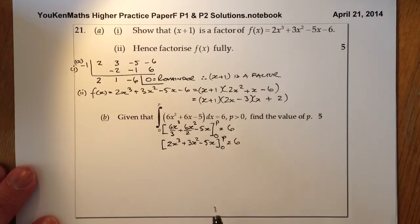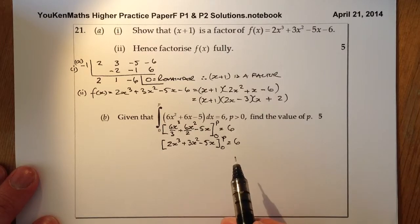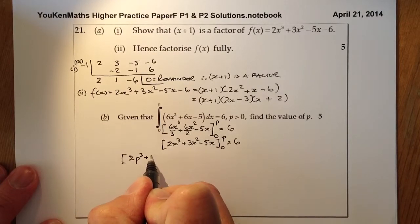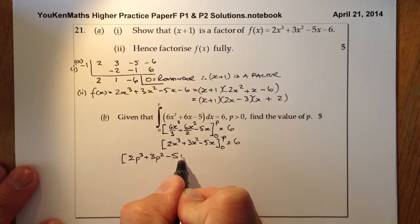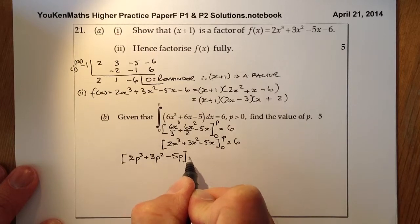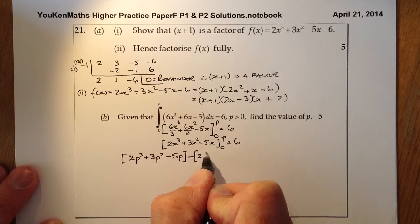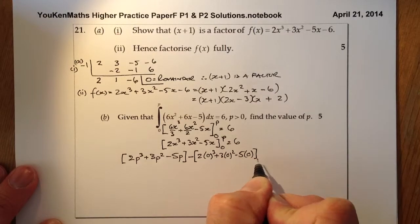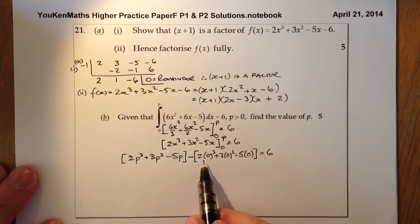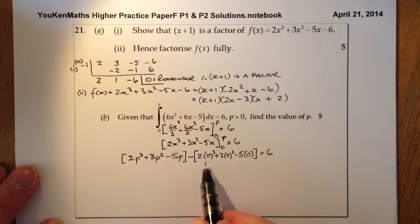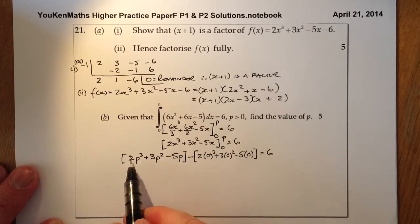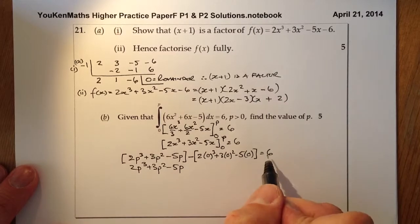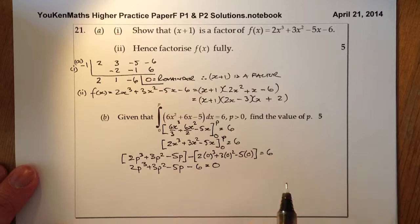Now we'll substitute p in wherever I see x, then subtract the lower limit of 0. So we have 2p³ + 3p² - 5p, take away [2(0)³ + 3(0)² - 5(0)], and that equals 6. This bracket here multiplies out to give 0. Be careful with that. So what's left is 2p³ + 3p² - 5p. If I bring the 6 over to the left-hand side, it's 2p³ + 3p² - 5p - 6 = 0.